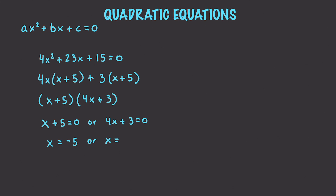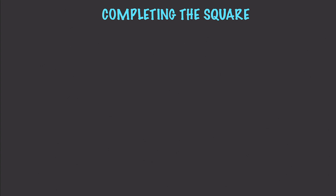Another important concept is completing the square. An expression is a perfect square if it equals two identical expressions multiplied by themselves. For example, x squared minus 6x plus 9 is a perfect square because it factors to (x minus 3)(x minus 3), which you can simplify to (x minus 3) squared.